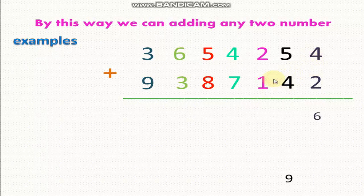At first, 4 plus 2 equals 6. 5 plus 4 equals 9. 2 plus 1 equals 3. 4 plus 7 equals 11. Write 1 and carry up 1 above 5. 1 plus 5 equals 6. 6 plus 8 equals 14. Write 4 and carry up 1.